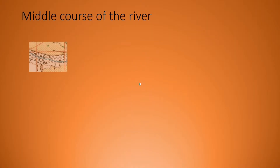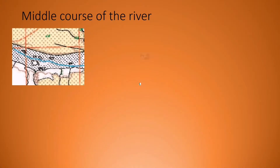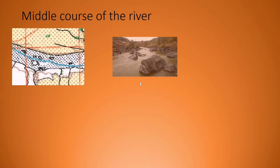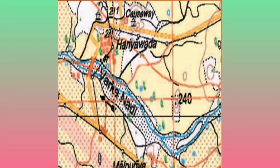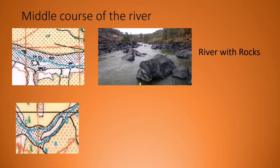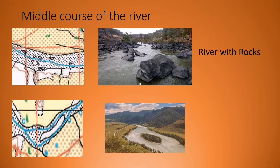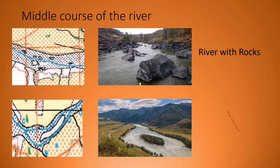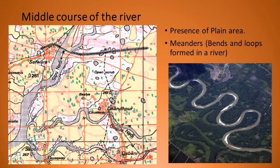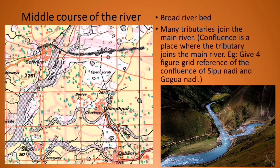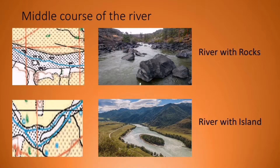In the middle course of the river, we also see some rock particles. Can you see these small round shapes here? These are rocks in a river. And look at the next picture — can you see a big white patch inside the river? That is an island inside the river. So all these features prove to us that the river is in the middle course.